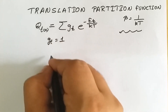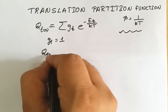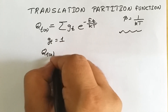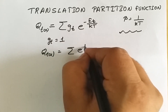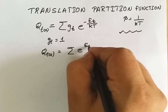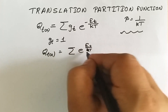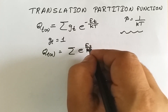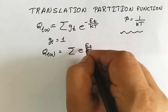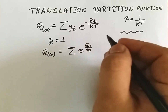Since the statistical weight factor or degeneracy factor is unity, our equation becomes: qt_x equals summation of e raised to minus e_t upon kT. Now we need to find out the energy associated when considering translational motion.